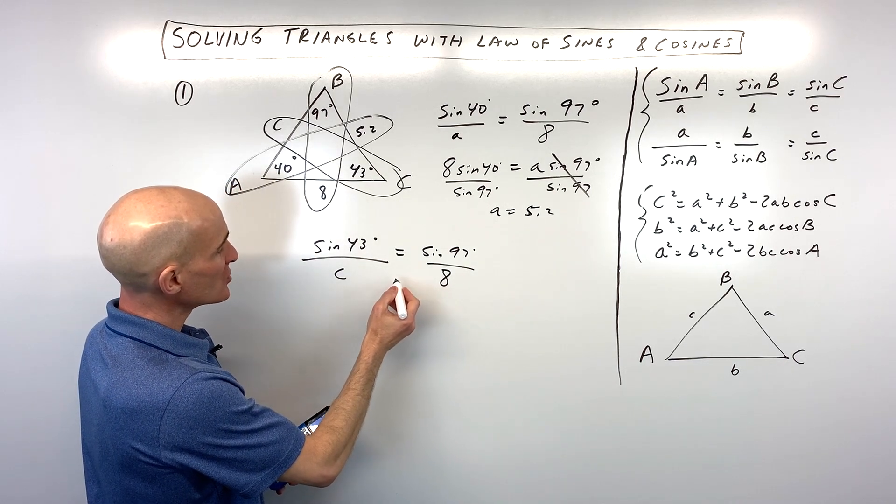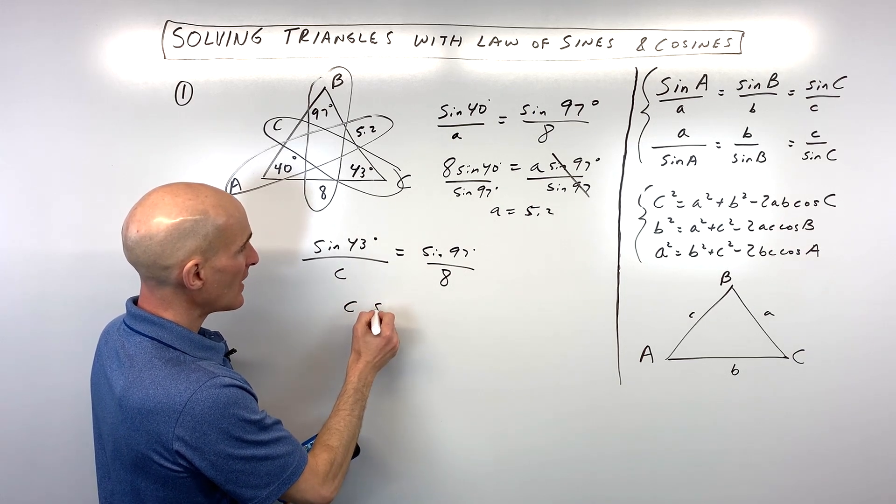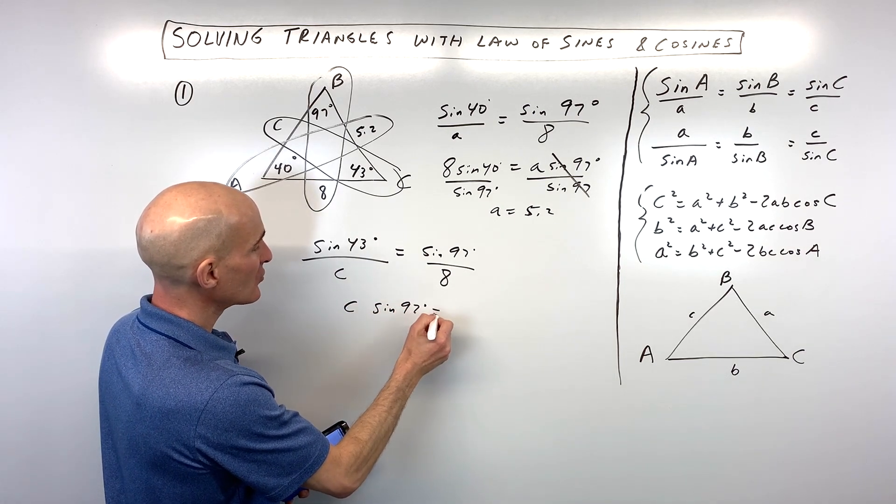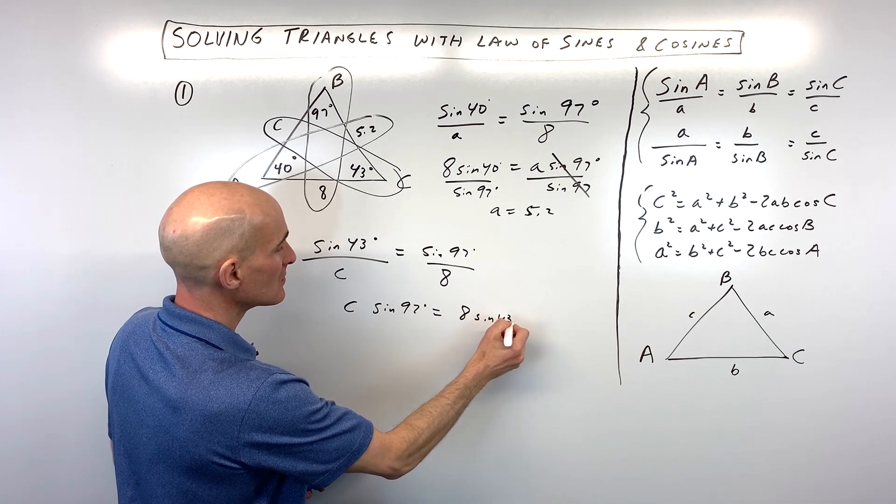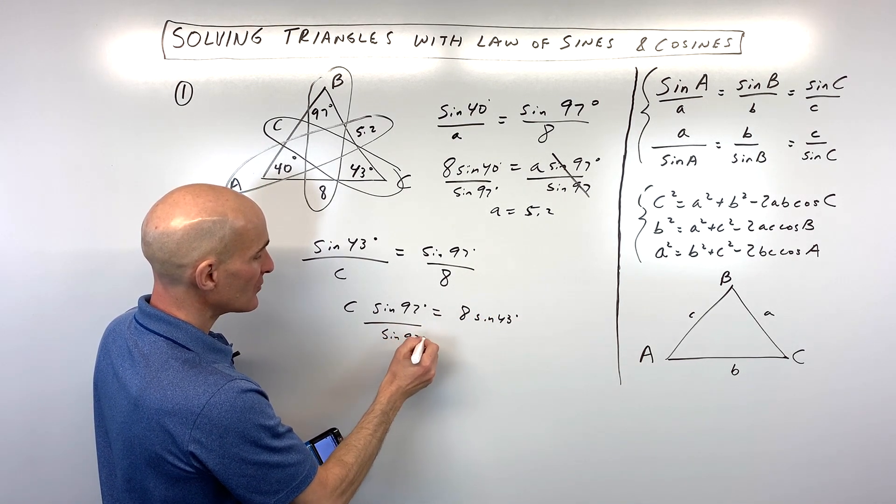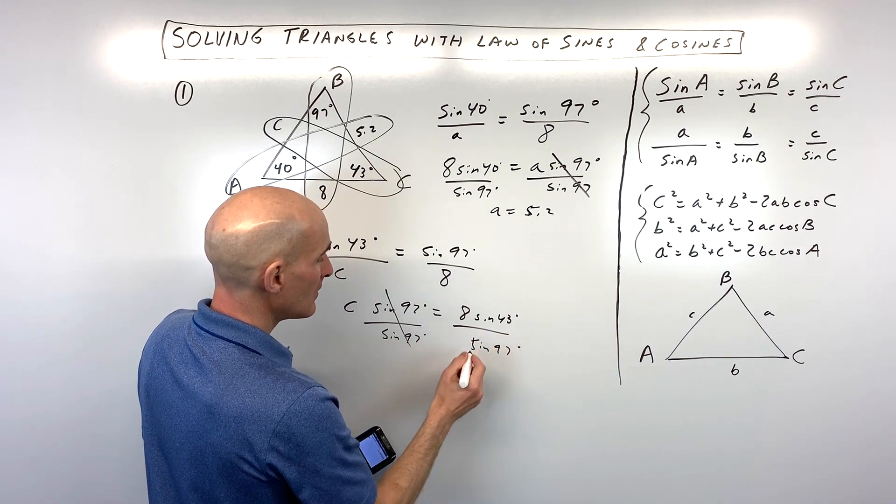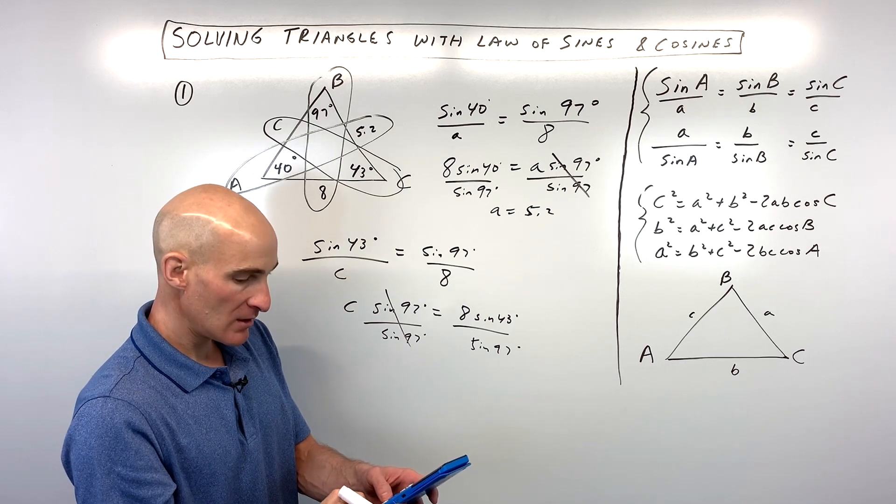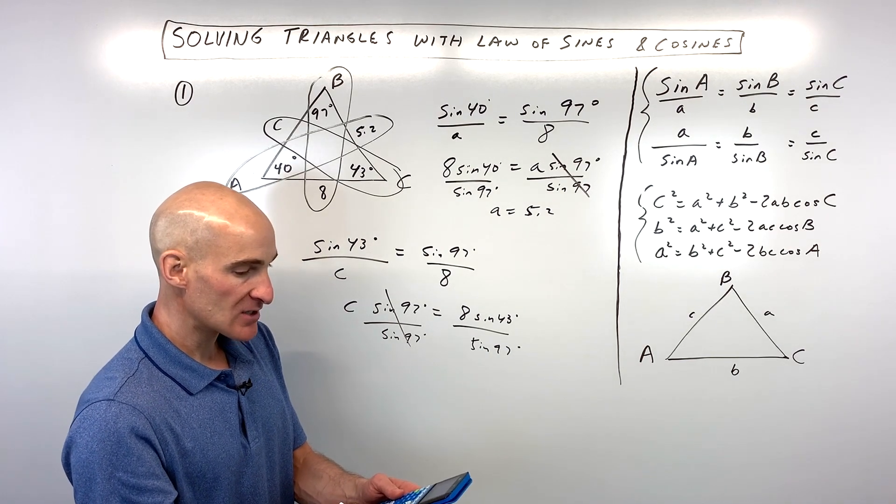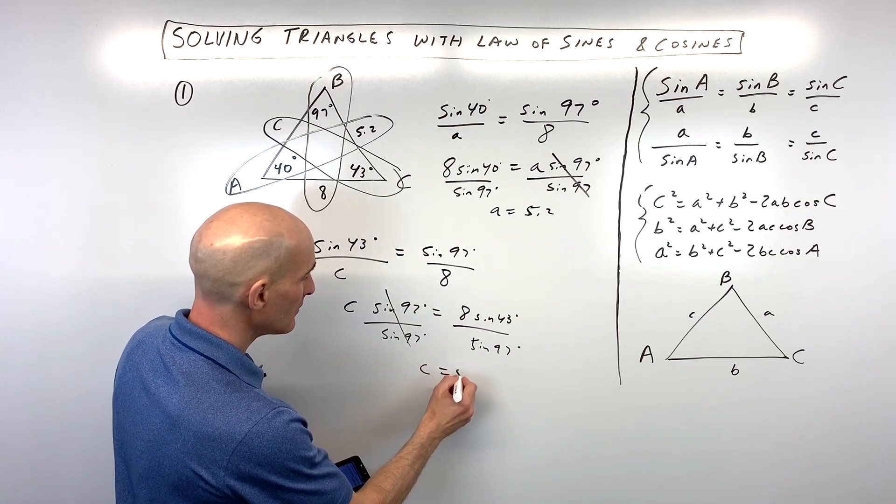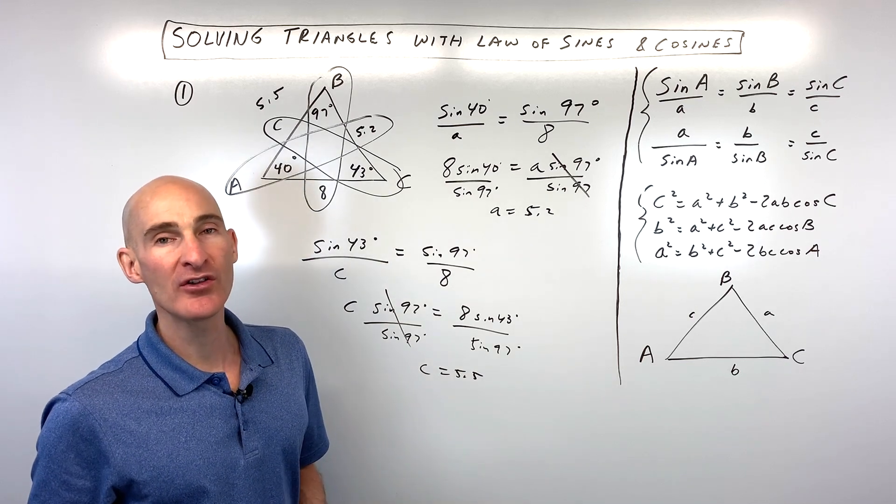So, now what we're going to do is we're just going to get C by itself. And so, again, I'm going to cross multiply across that equal sign. So, we have C times the sine of 97 degrees equals 8 times the sine of 43 degrees. And then divide both sides by sine of 97 degrees to get C by itself. And check my calculator work on this. We've got 8 sine of 43 divided by the sine of 97. Okay, so I'm getting 5.5 for side C. And you solve the triangle. You found all the angles, all the sides.